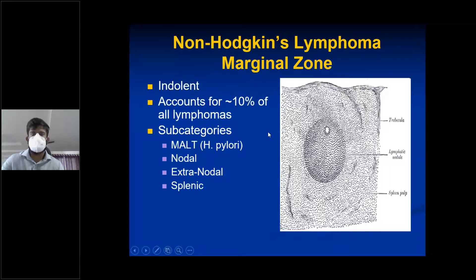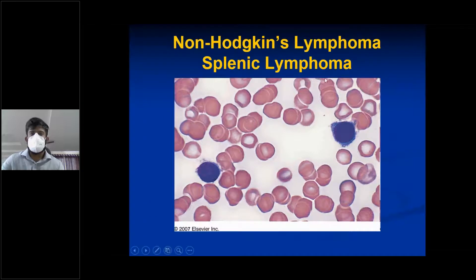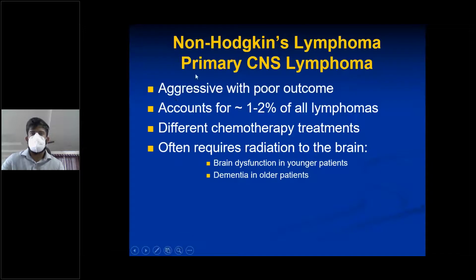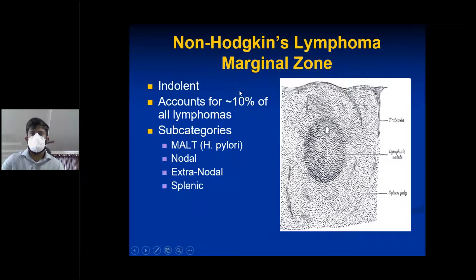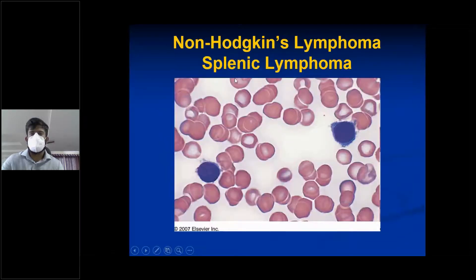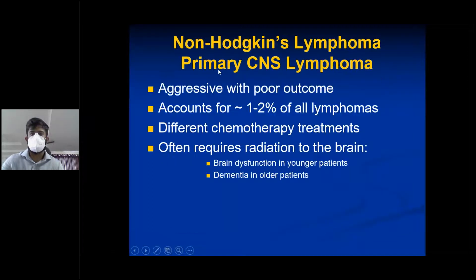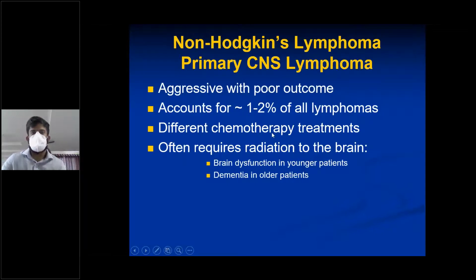Splenic lymphoma is a subcategory with similar classification to marginal zone lymphoma. Primary CNS lymphoma is an important aggressive lymphoma with poor outcome, accounting for 1–2% of all lymphomas. It requires different chemotherapy treatments and often radiation to the brain. Sequelae include brain dysfunction in younger patients and dementia in older patients.